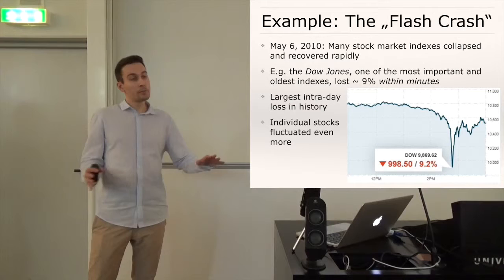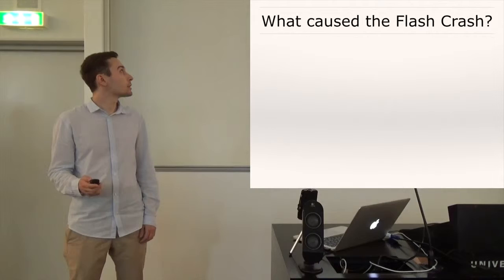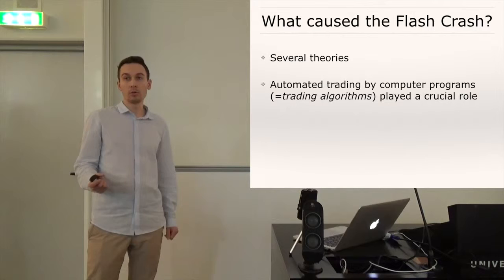And individual stocks fluctuated even much more. So there are several theories about what caused the flash crash, and I can't go into detail here. But basically, almost all of them agreed that automatic trading activities executed by computer programs, or so-called trading algorithms, played a huge and crucial role.